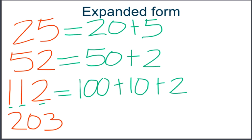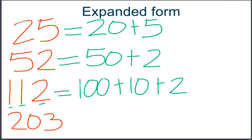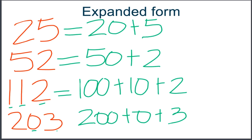And two hundred and three: a two in the hundreds place — that's two hundreds. Two hundred plus zero, because there is a zero in the tens place, plus three ones. Two hundred plus zero plus three equals two hundred and three. This is how you write in expanded form.